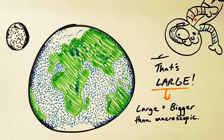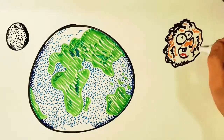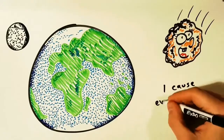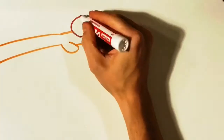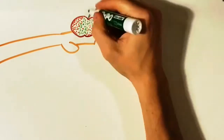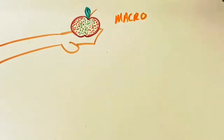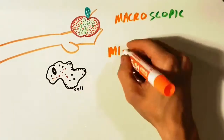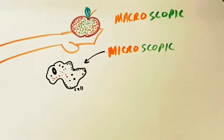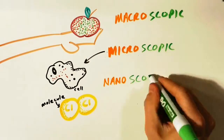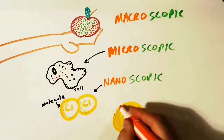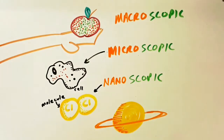'Large' just means it's a lot bigger than macroscopic. To review: if an object is about the right size to hold in your hand, we call that macroscopic. If it's so small you need a microscope to see it, we say microscopic. If it's even smaller than that, we call it nanoscopic. And if you need kilometers to describe it, we call that large.